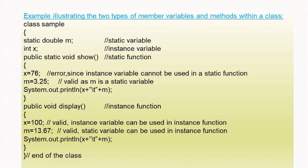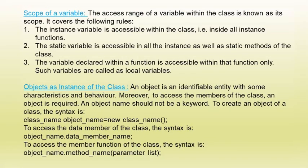Next is the scope of a variable. The access range of a variable within the class is known as its scope. The rules are: an instance variable is accessible within the class, that is, inside all instance functions. A static variable is accessible in all instance as well as static methods of the class. A variable declared within a function is accessible within that function only — such variables are called local variables.